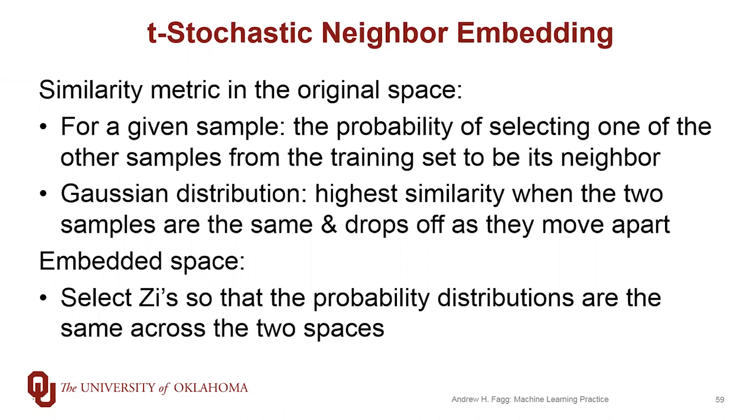Once we've done this in the original space, we can begin to work in the embedded space. Like the other algorithms we've looked at, we get to select the positions of our samples within this new zi space.